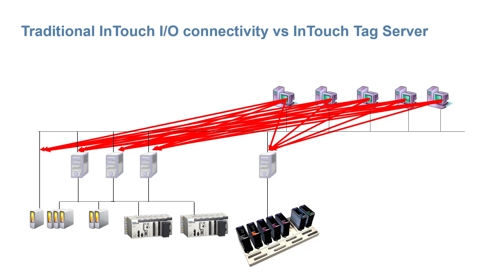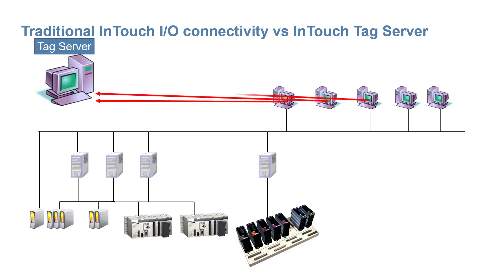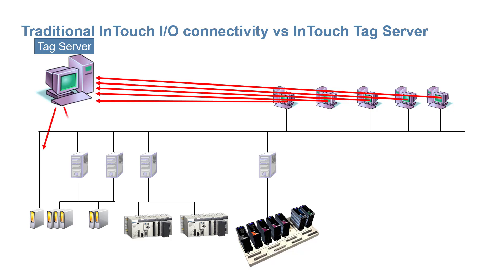The solution is the tag server. A tag server centralizes the point-to-point IO communications. This means that each visualization node need only make a single connection to the tag server. The tag server then makes a connection to each data source.